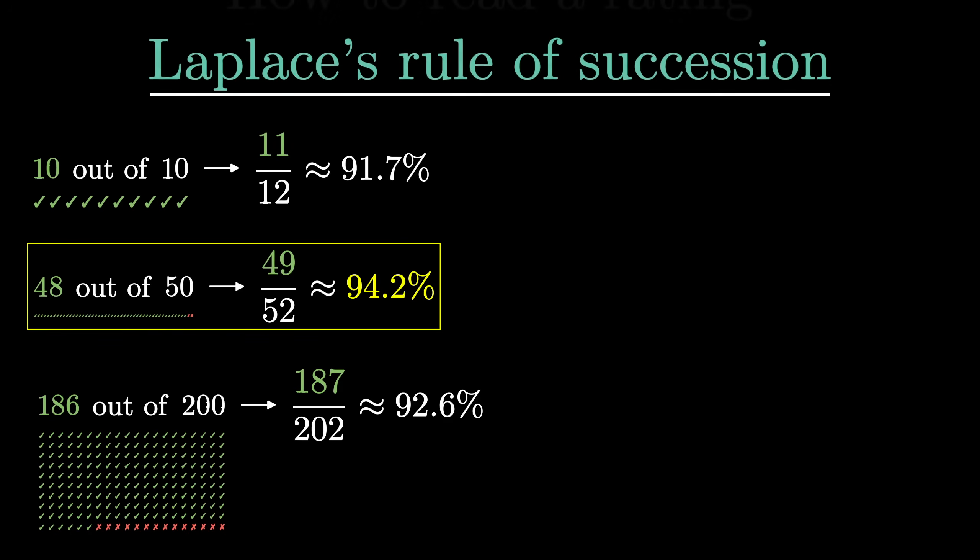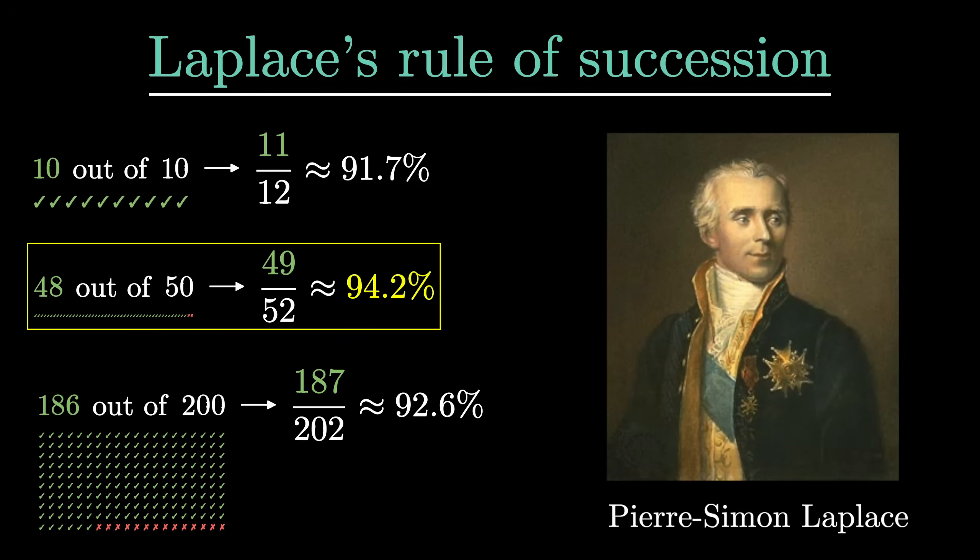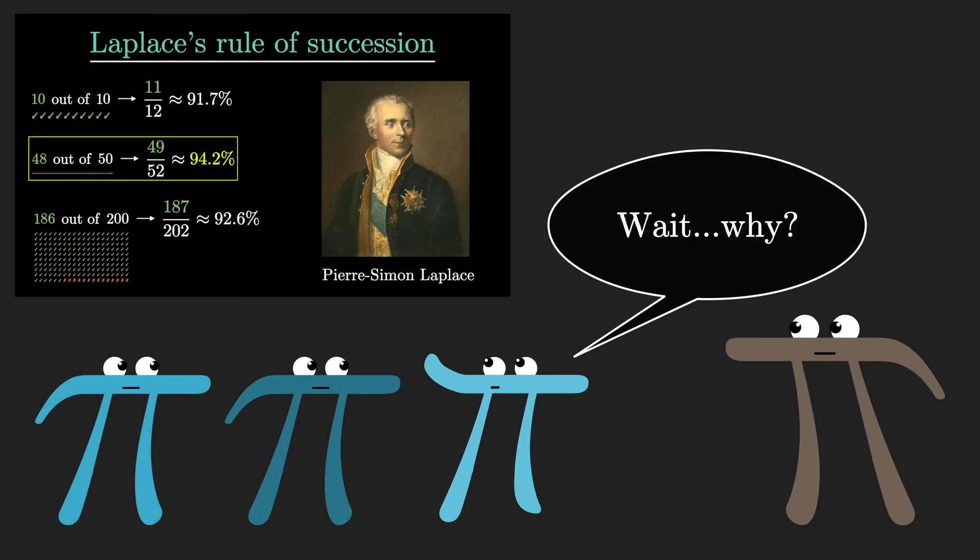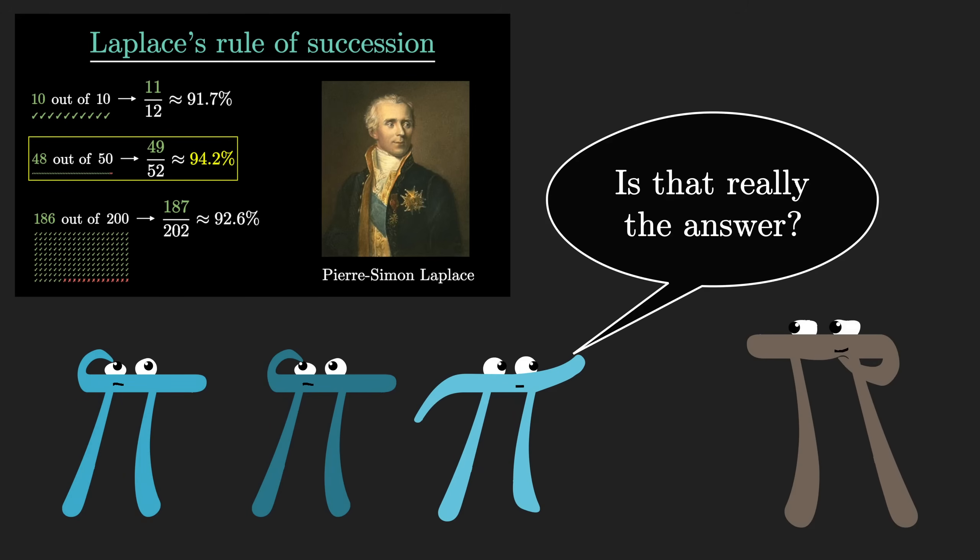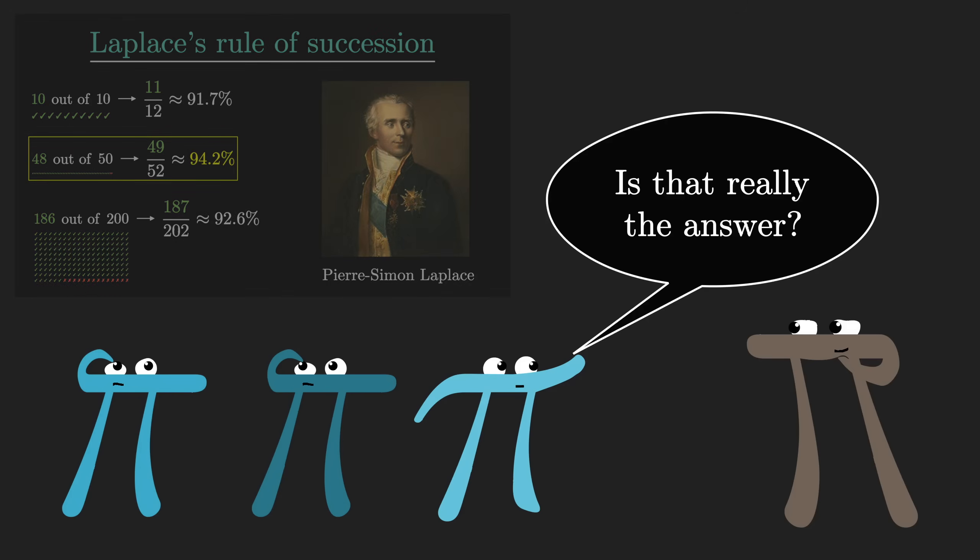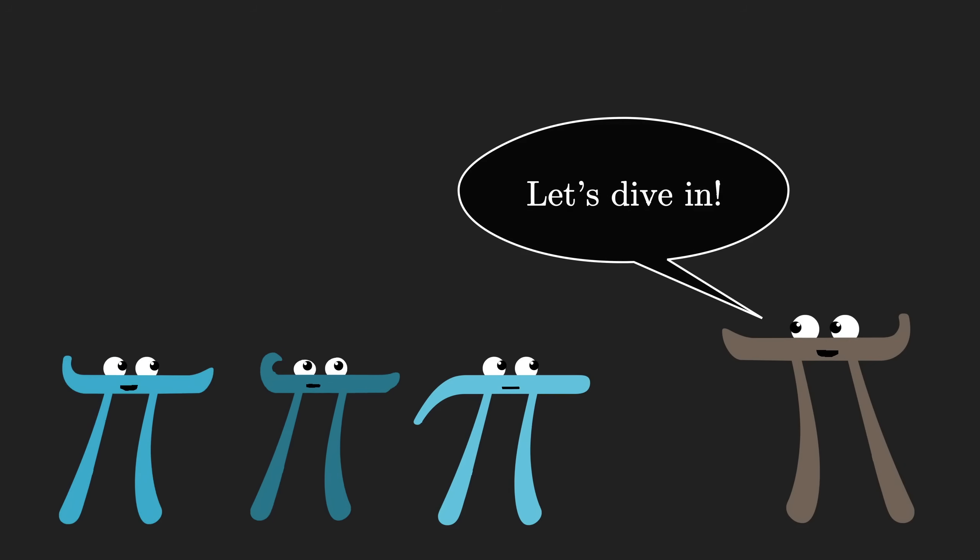This is something known as Laplace's rule of succession, it dates back to the 18th century. And to understand what assumptions are underlying this, and how changing either those assumptions or your underlying goal can change the choice you make, we really do need to go through all the math. So without further ado, let's dive in.